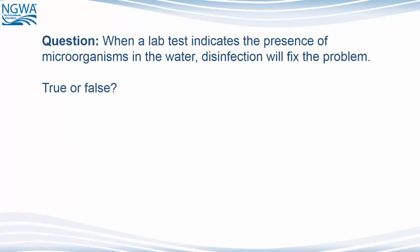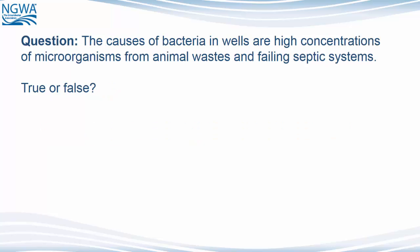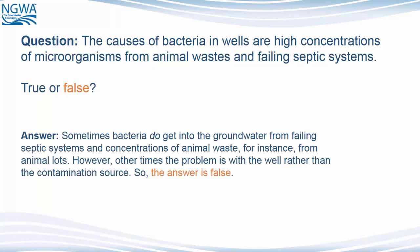Question: When a lab test indicates the presence of microorganisms in the water, disinfection will fix the problem. True or false? Sometimes disinfection will fix the problem, but not always — so the answer is false. Sometimes bacteria get into groundwater from failing septic systems and concentrations of animal waste, for instance from animal lots. However, other times the problem is with the well rather than the contamination source. So the answer is false.